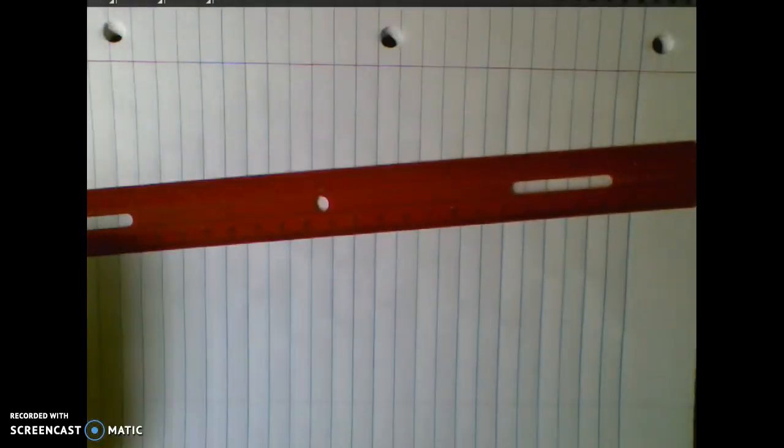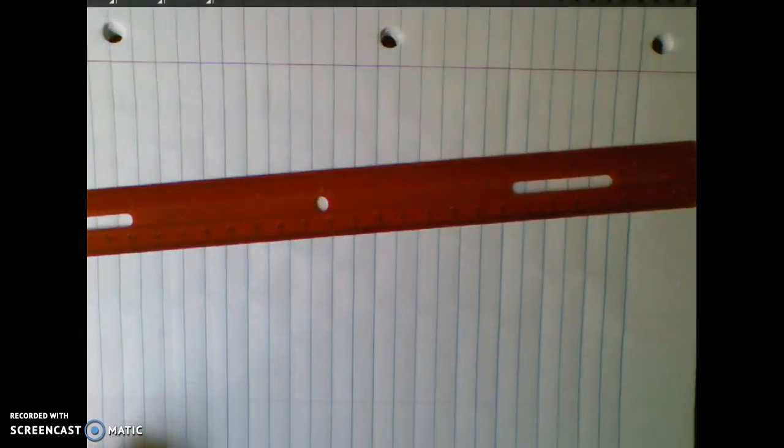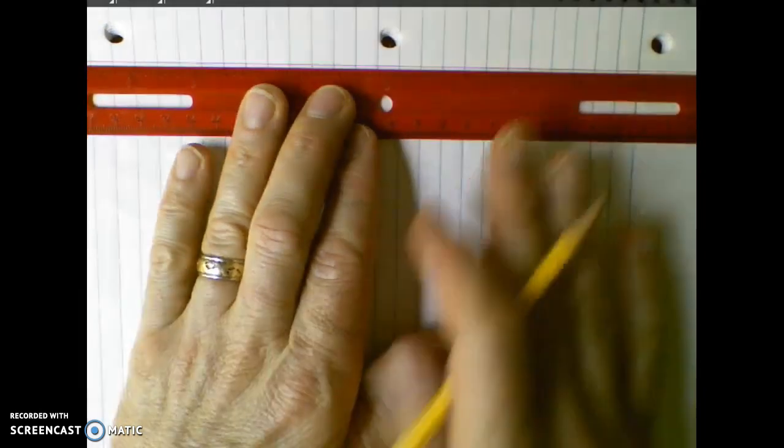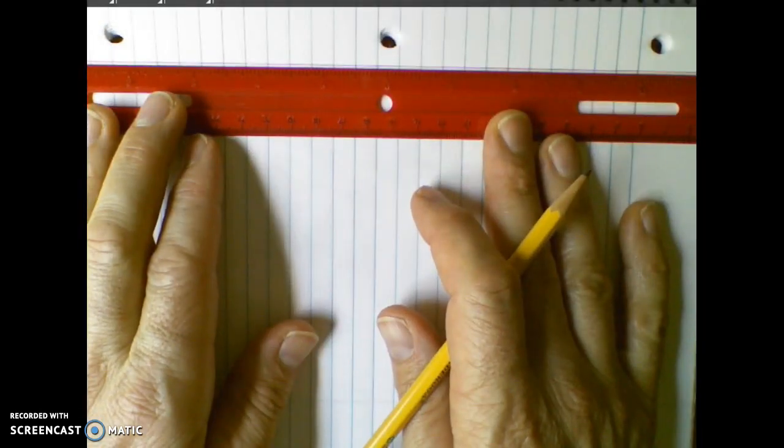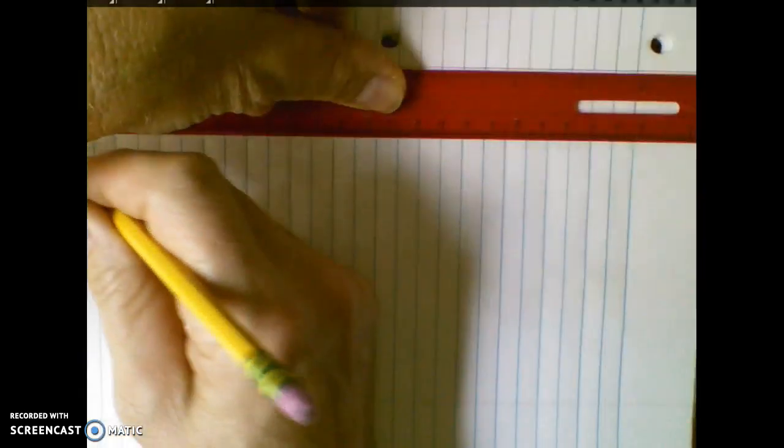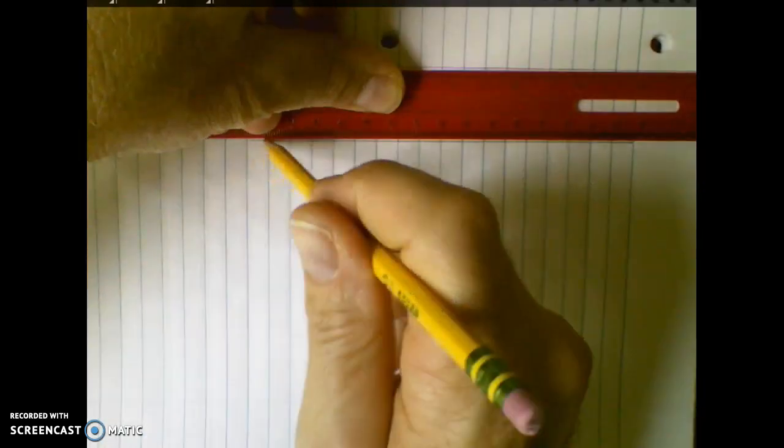To begin, take your ruler. You'll notice that there are two lines that are red on your page, one above and one below. Place the ruler so that it is just underneath the top red line and use that as a guide to draw a line across all of the blue lines on your page. You'll need to hold the ruler carefully in order to make sure you get a good straight line.